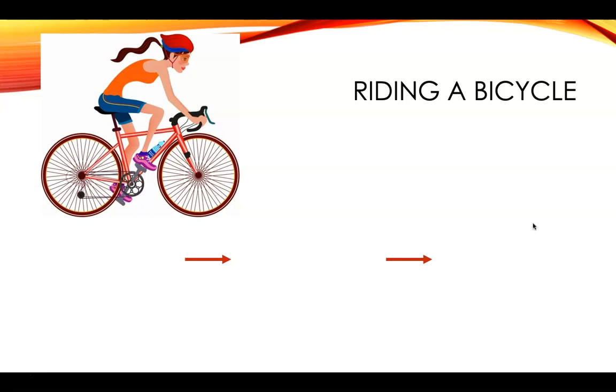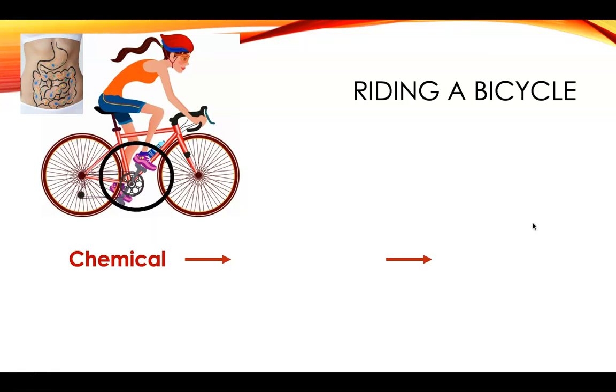Riding a bicycle. So if we think about what is actually powering the bike, that would be the human. Well, what's powering the human? How do we get our energy? We eat food. So digestion is a chemical reaction. So that's really the power source. The biker pedals, which is mechanical. And then where the tires meet the road, there's friction, which will produce heat or thermal energy.